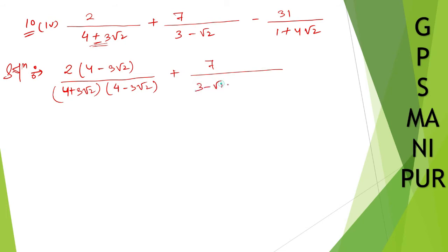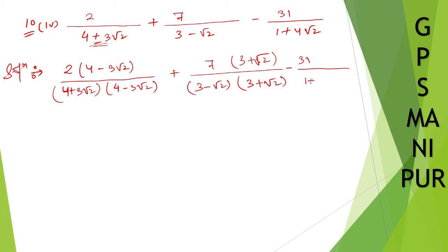For the second fraction, the denominator is 3 minus root 2, so we multiply by 3 plus root 2 — the same thing to the numerator as well. For the third term, minus 31 divided by (1 plus 4 root 2), we multiply by 1 minus 4 root 2.